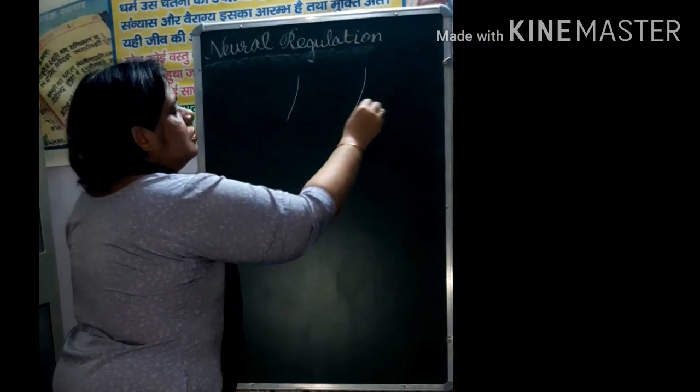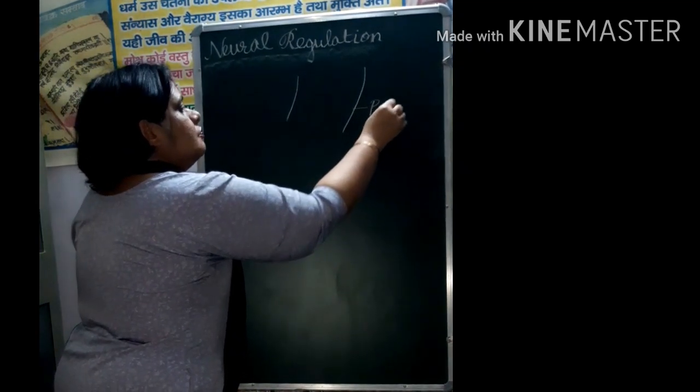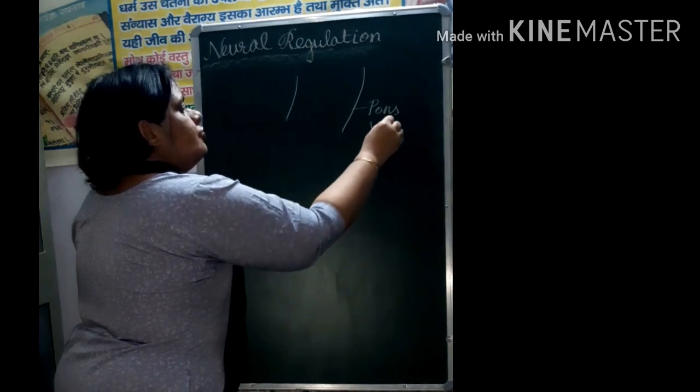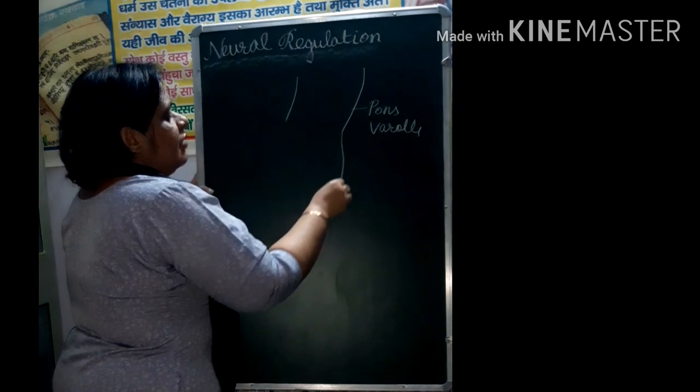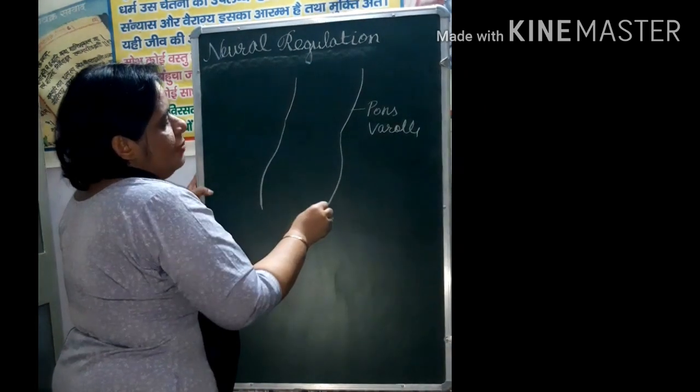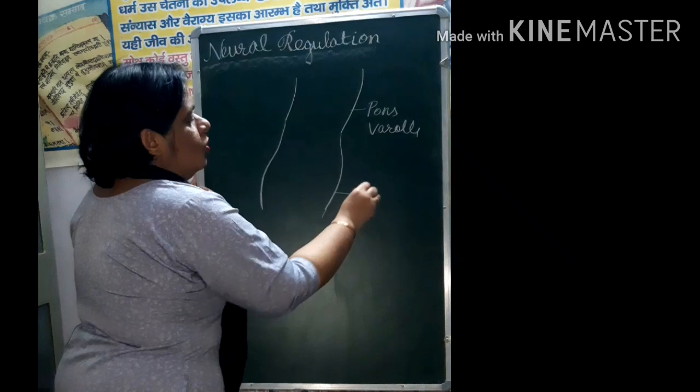This is first portion it is called Pons varolii. And this is next portion that is the last portion of brain that is called Medulla Oblongata.